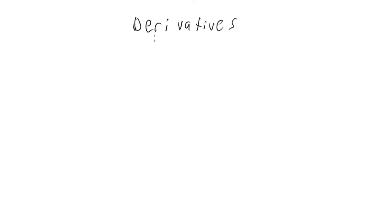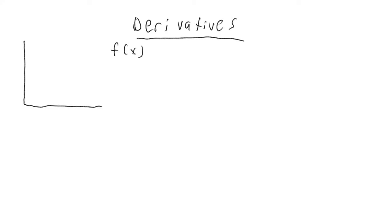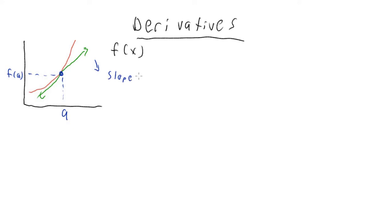So we probably know what a derivative is if you're watching this video. Basically, we have some function f of x, and we have some curve with a tangent line — a line that's tangent to this curve at some point. Let's call this a and let's call this f of a. And so the slope of this line is the derivative.